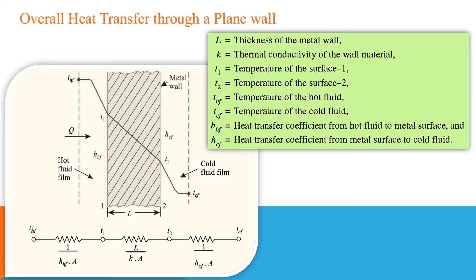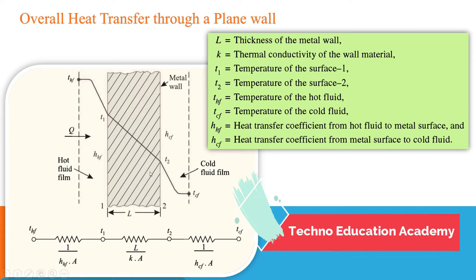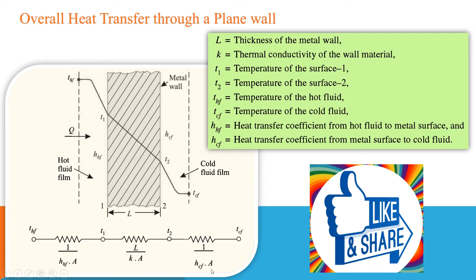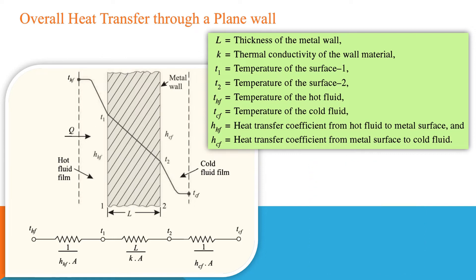If you want to clarify your fundamentals on how to derive the equation of resistance for conduction and convection, you can watch the previous video. This is the thermal circuit for this plane wall: 1 upon H_HF·A is the convective resistance for the hot fluid, L upon KA is the conduction resistance for the plane wall where K is the thermal conductivity of the wall material, and 1 upon H_CF·A is the convective resistance for the cold fluid.